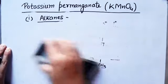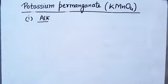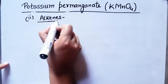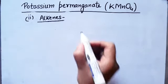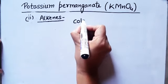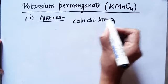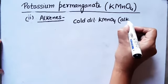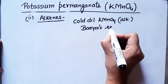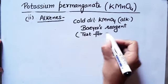Next, we will discuss the reaction of KMnO₄ with alkenes. In alkenes, if we use cold dilute KMnO₄ — which is also called cold dilute alkaline KMnO₄ — this reagent is commonly known as Baeyer's reagent. Baeyer's reagent is used to test unsaturation in a compound.